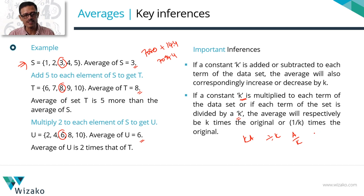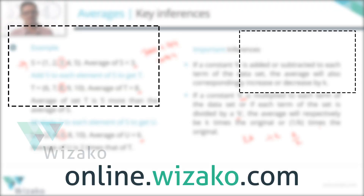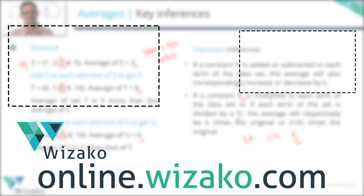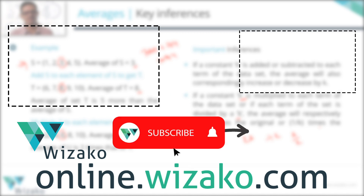So these are the two key inferences. First: if a constant K is added or subtracted from each element in a data set, the average also goes up or comes down by K. Second: if each element is multiplied by K, the average is also multiplied by K; if each element is divided by K, the average becomes 1/K times the original average. For GRE quant prep, sign up for the most comprehensive and affordable online quant course at online.wisaco.com. Check out the related videos and remember to subscribe to this channel.